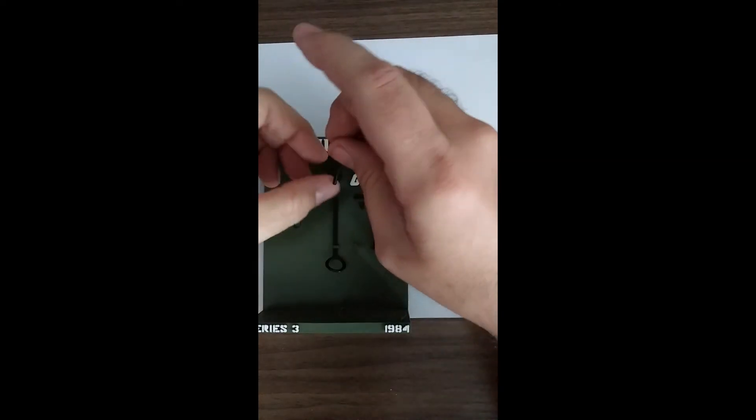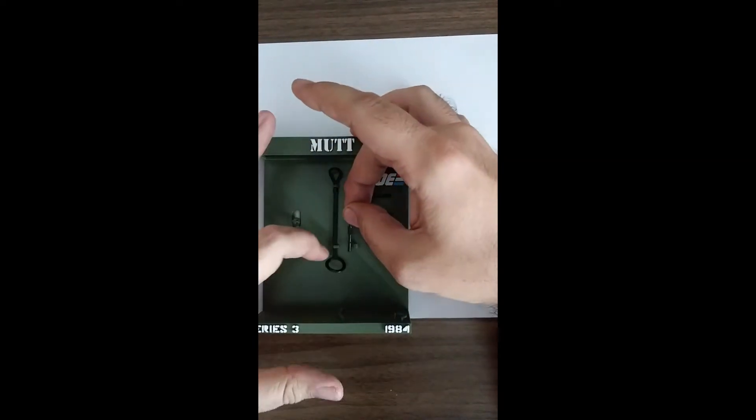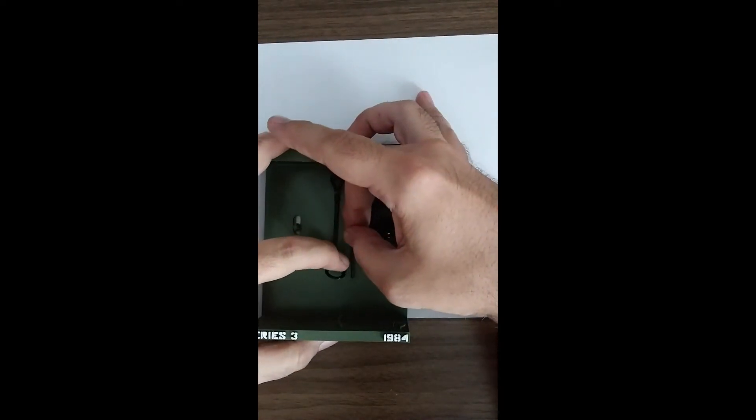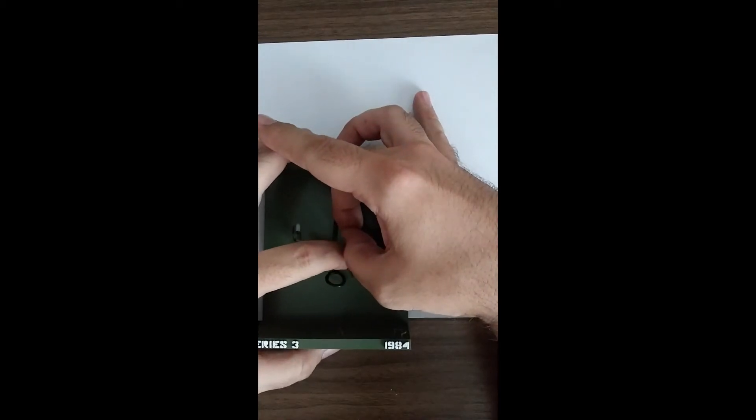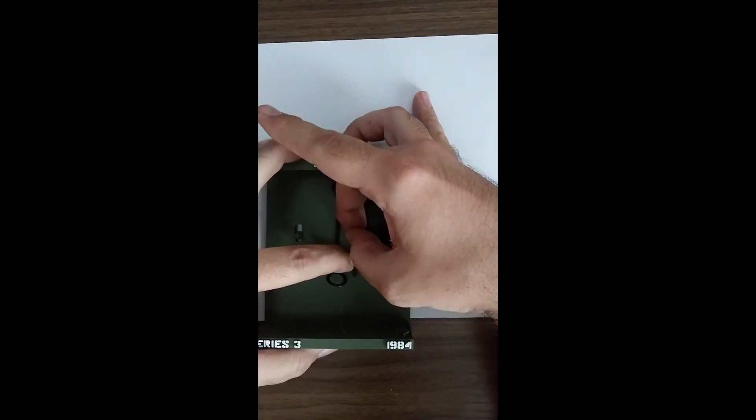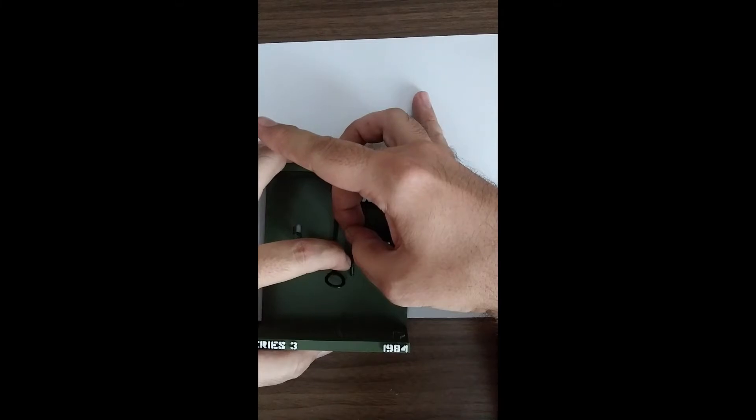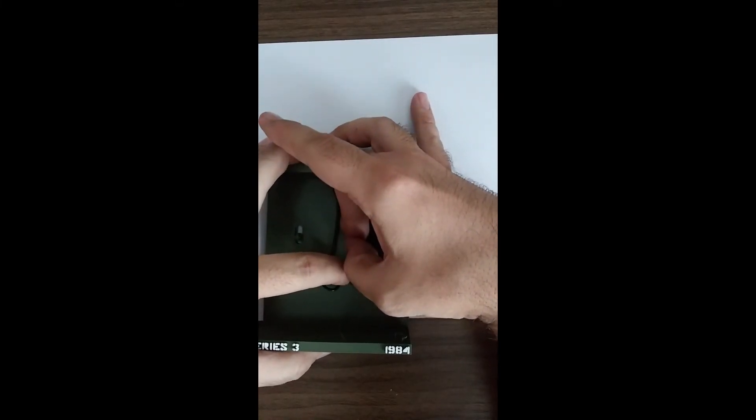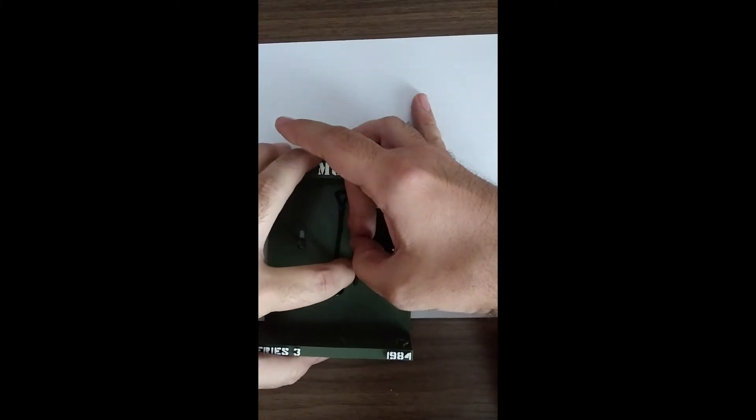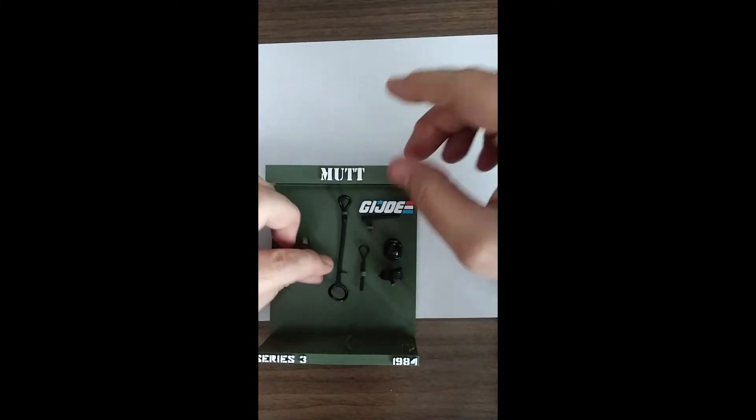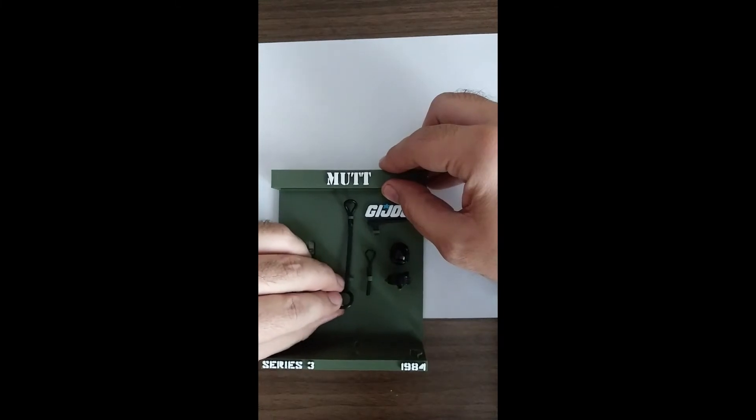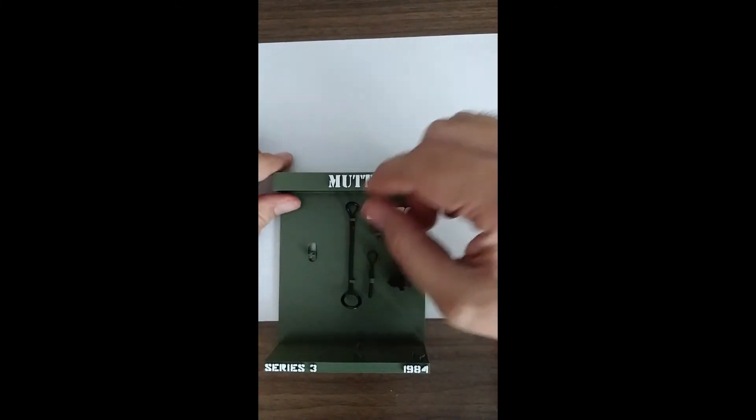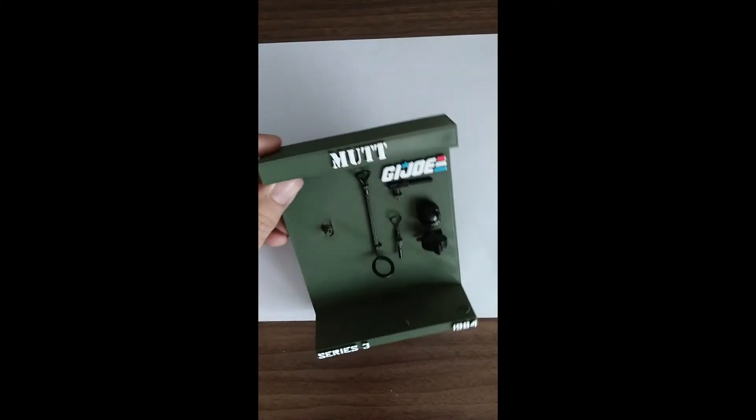And then the nightstick is going to go into this holder. And this is one you may want to do first because it can be real hard to get to once everything else is in there. There we go. Alright. So we have all that stuff in there.